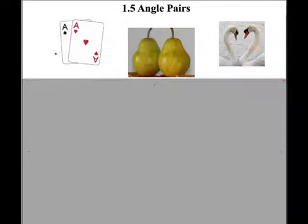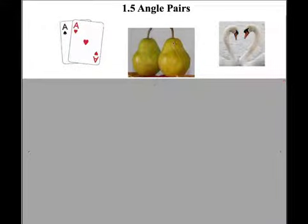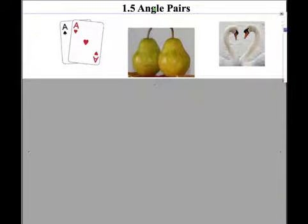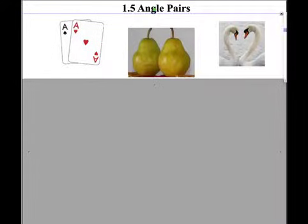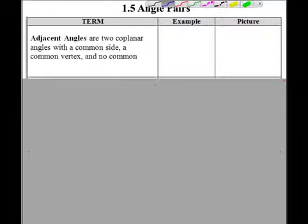We're talking about angle pairs — not pairs of cards like a pair of aces, not a pair of lovebirds. We're talking about angle pairs. So the first section of this chapter we start off with a bunch of definitions, a bunch of vocab. We're gonna end the same way, so this one we got a bunch of vocab. We're gonna do some nice stuff at the end. Let's hammer this out, make sure we have it, and we're good to go for the rest of the year.